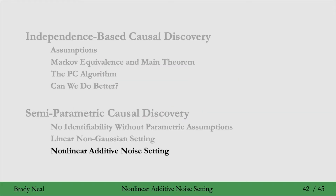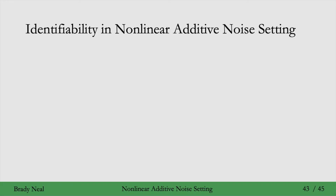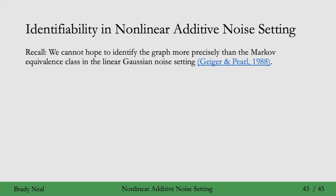In the final section, we'll look at a nonlinear semi-parametric assumption where we are assuming additive noise. Recall that we cannot hope to identify the graph more precisely than the Markov equivalence class in the linear Gaussian noise setting. But what if the structural equations are nonlinear?